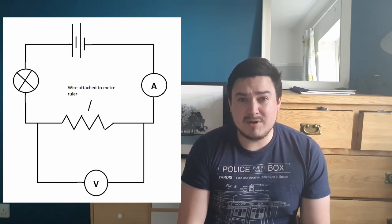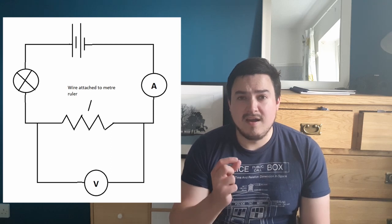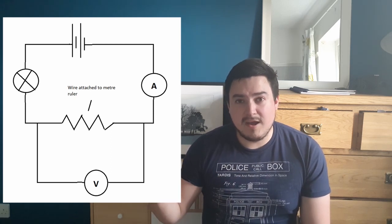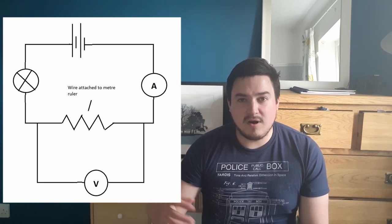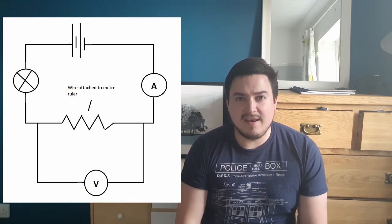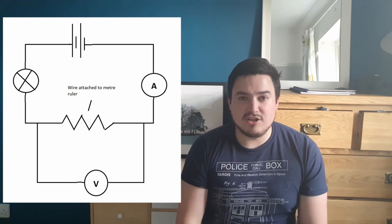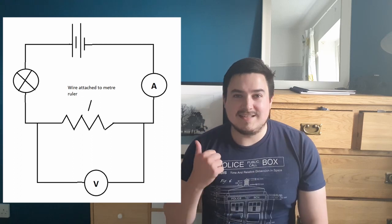We can also use this circuit to work out how the thickness of a wire affects resistance. Instead of that length of wire, we swap it for a slightly thicker wire, measure the current and voltage again, and calculate the resistance. So that's the circuit you'd need to use. The video here will also show you how changing the area of a wire can affect the resistance in a circuit.